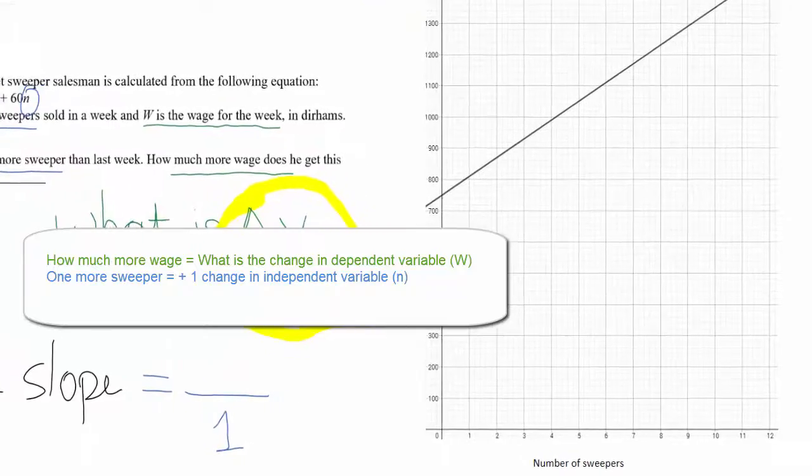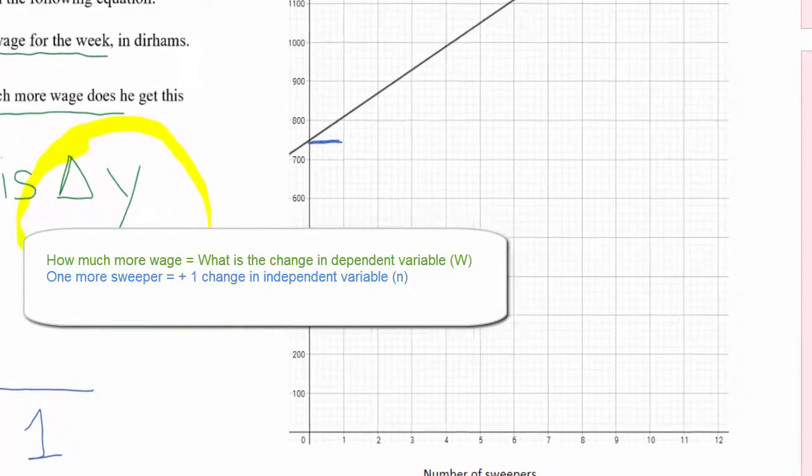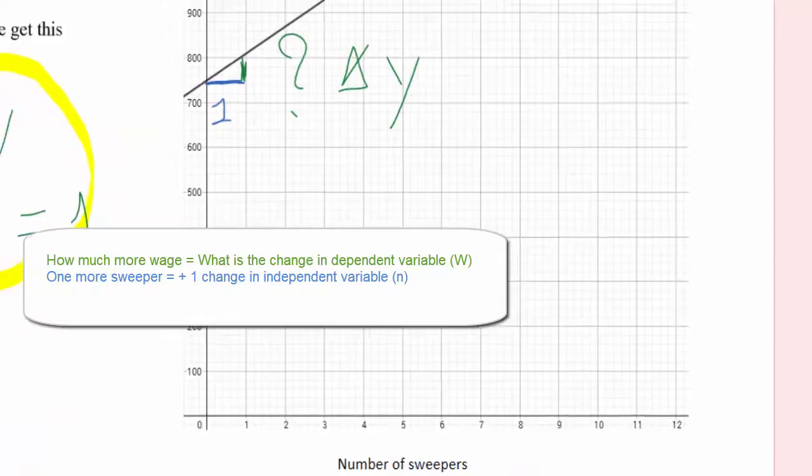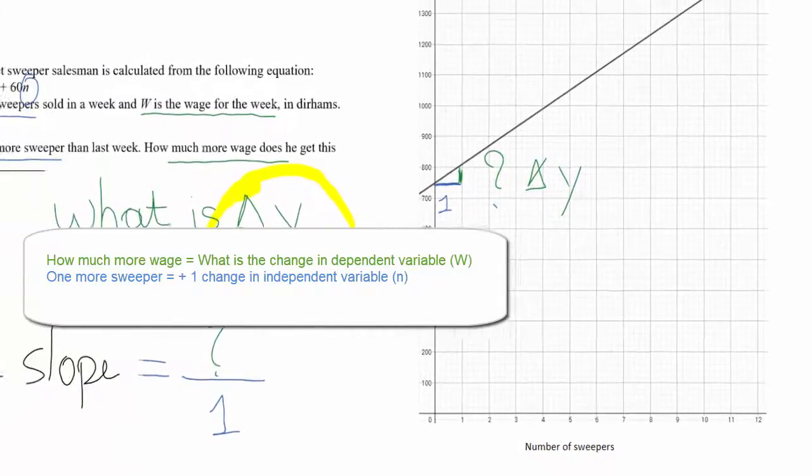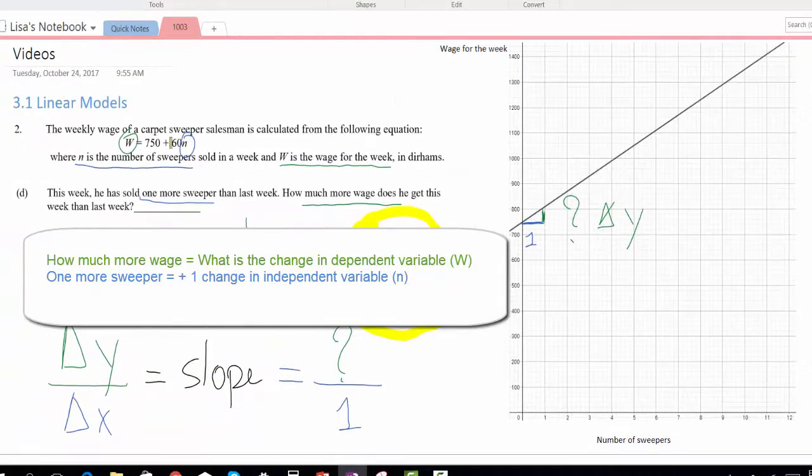So for one more sweeper, one more independent variable, how much more money will he make? So what is the change in the dependent variable?